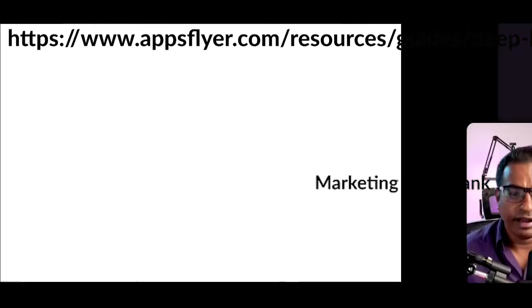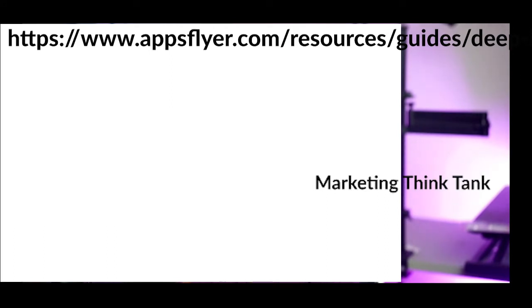The second reason to use deep linking is because it helps you with retargeting — it helps you pick up from where the user left off. If somebody left from the shoes page on your app, remarketing with deep linking lets you target them right from where they left off. The third reason is the personalization it enables: because you already have the user's details, you can send them directly to the page you want them to go, optimizing your conversions.